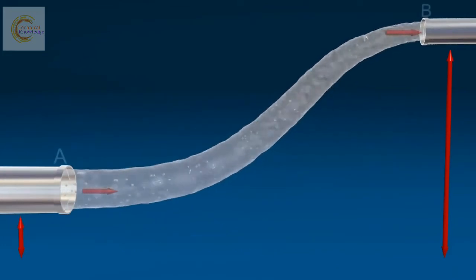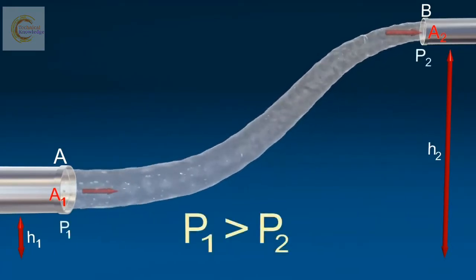Consider a tube AB of varying cross section A1 and A2 and at different heights H1 and H2. Liquid is flowing from A to B. P1 is greater than P2.